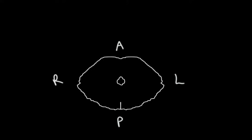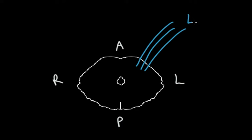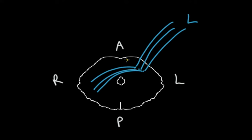You have descending fibers from all over the brain, from the left side, that synapse in the base of the pons and then cross over to the cerebellum — and that's how they modulate right-sided coordination. You also have the corticospinal tract running down in the front of the pons.